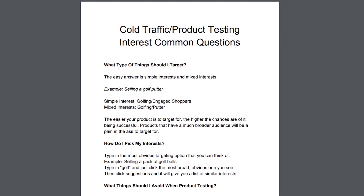So what types of things should you target? Basically simple interests and mixing simple interests. The example I put here is we're selling a golf putter. A simple interest would be just golfing, maybe narrowed down by engaged shoppers. A mixed interest would be golfing narrowed down by putter. Those are basically what I do when starting a new campaign — something really basic and obvious, or something a little more specific. A good combination of both works really well.